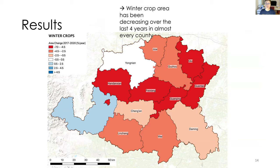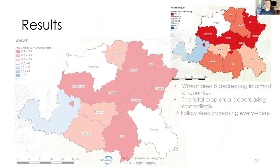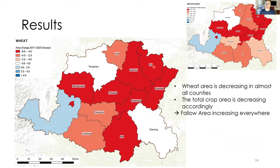Using the maps to look at changes over time: the area change between 2017 and 2020 in the winter crop area shows decreasing winter crop area in almost every county. The same pattern appears for winter wheat specifically. Since wheat area is decreasing and fallow area is increasing in almost all counties, wheat is not being substituted by other crops when it is not planted.